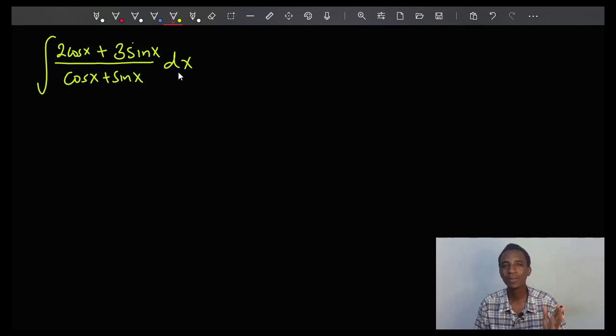I am back with another video. For today we are evaluating this integral here: the integral of 2cos x plus 3sin x divided by cos x plus sin x. We can try doing this with a Weierstrass substitution where we let t be equal to tan x over 2.